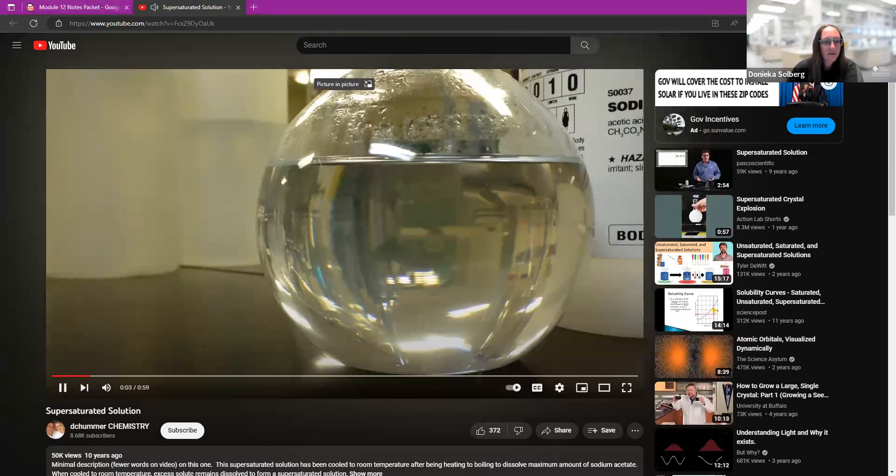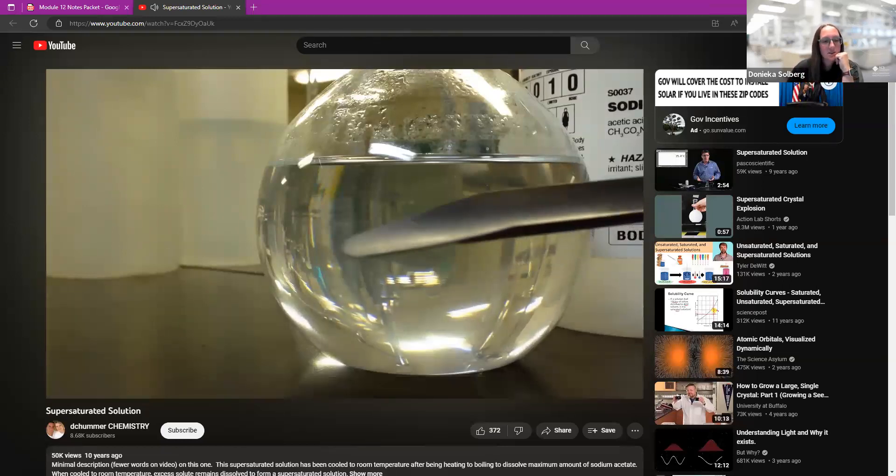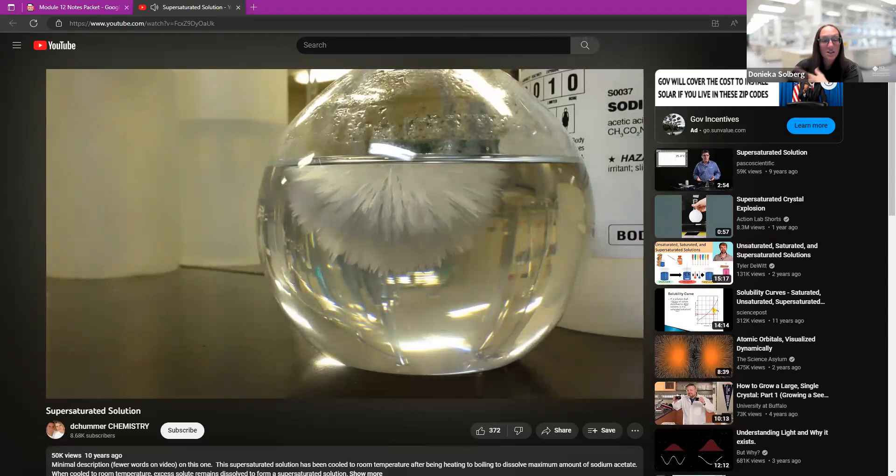Just really quick - I'm going to add one tiny seed crystal. I'm not sure if you can see it on the tip of that scoop. You add that and it agitates it just enough that it's going to start to crystallize. All of that extra stuff that you had dissolved is now coming out of the solution and turning into crystals.